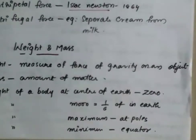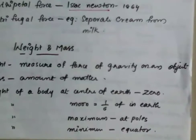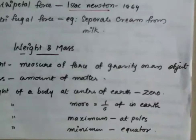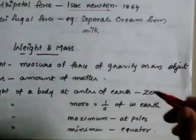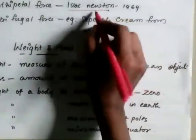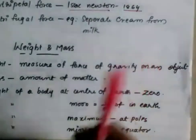The force that keeps an object moving with a uniform speed along a circular path is centripetal force. Centripetal force was discovered by Isaac Newton in 1864.